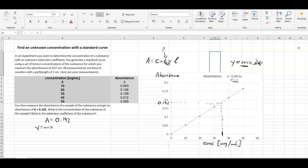So we said we've got y equals mx. So what we need to do is we solve this or make x the subject. So x equals y over m. And for y, that would be our absorbance 0.192 divided by the gradient. And this gradient is given here as 0.0053.